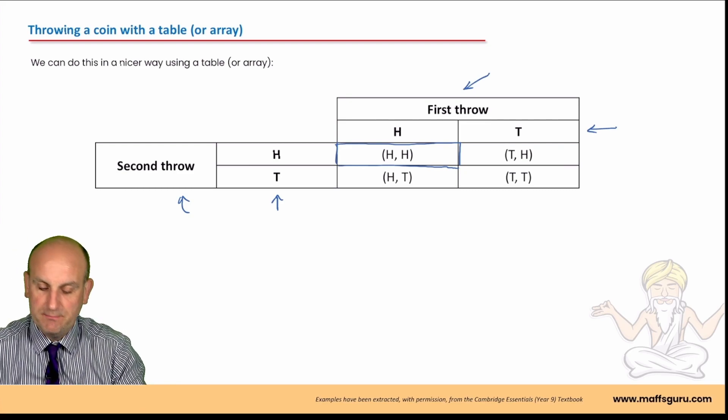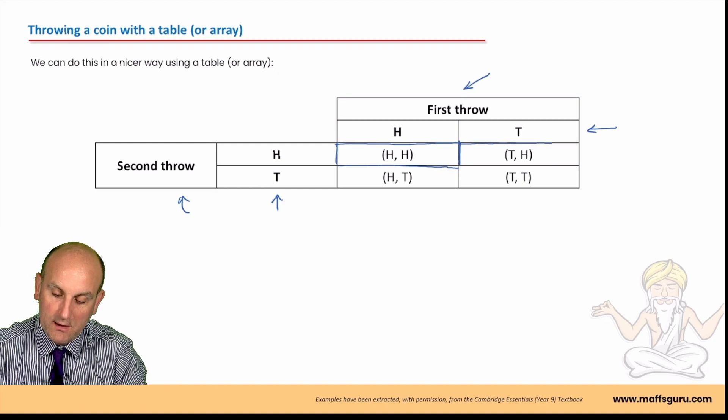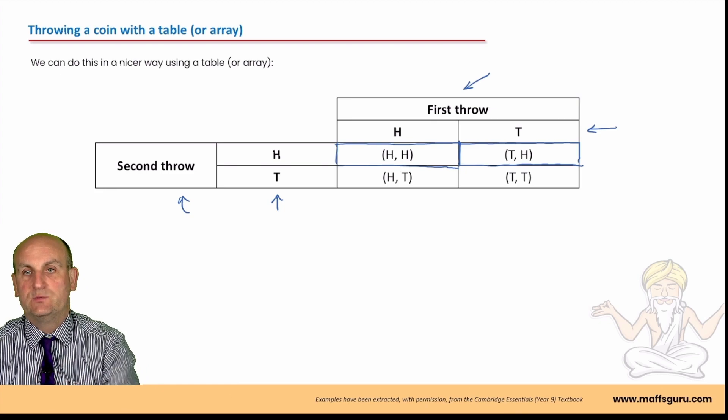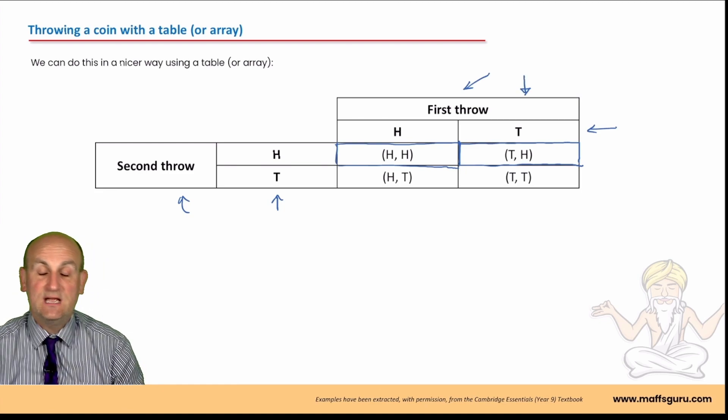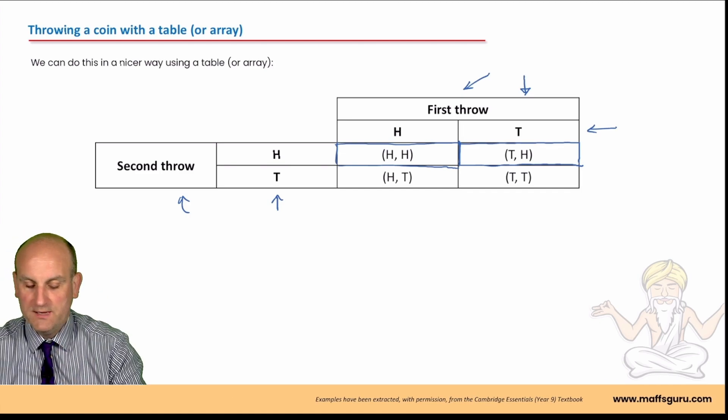The order of that is important. If I look at this second one that I'm highlighting in blue now, what do we notice? It's t comma h. Why? Because my first row was a tail and my second throw was a head. That order becomes important.